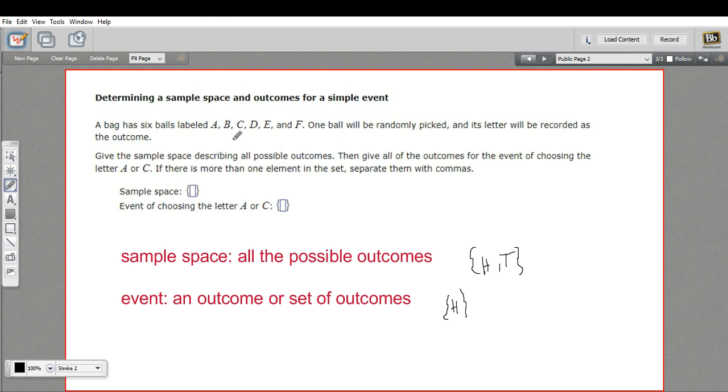Alright, let's read this problem and see if we can figure it out. It says, a bag has six balls labeled A, B, C, D, E, and F. One ball will be randomly picked and its letter will be recorded as the outcome.